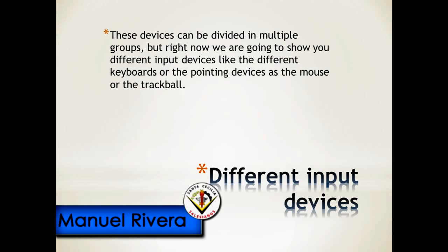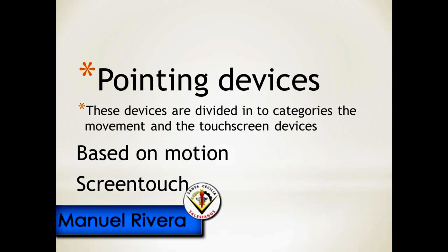There are different input devices that can be divided into multiple groups. We are going to show you different input devices like the different keyboards or the pointing devices such as the mouse or the trackball. Pointing devices are divided into two categories: movement devices and touchscreen devices.